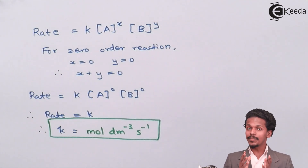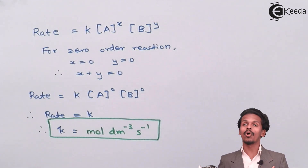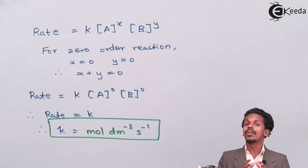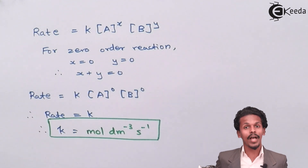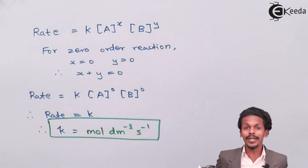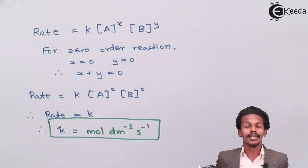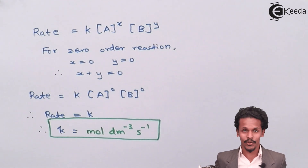So it has been confirmed that the rate constant has different units based on different orders of reaction, which also depend on the concentration of reactants. Thank you for watching. I hope you now understand the units of rate constant for first-order and zero-order reactions. Please share this video and don't forget to subscribe to the Ekita channel. Thank you so much.